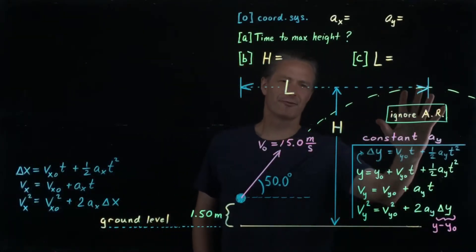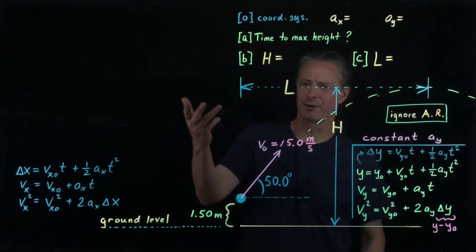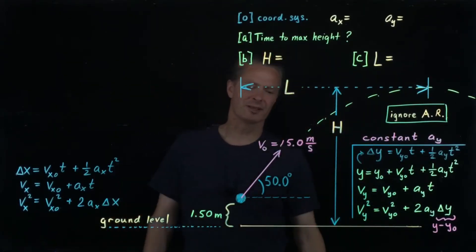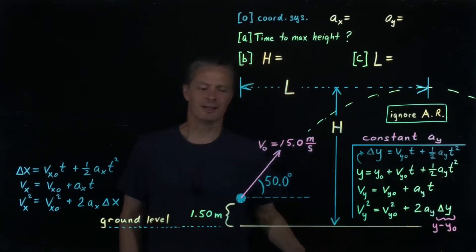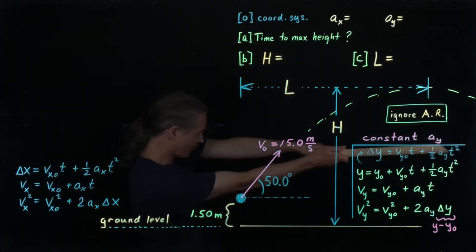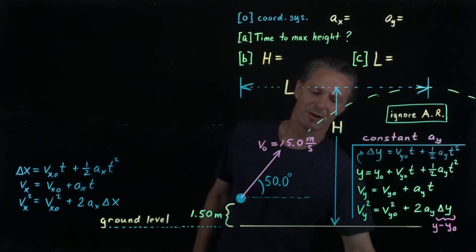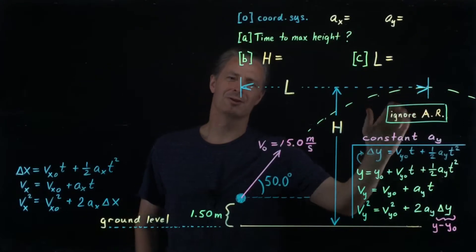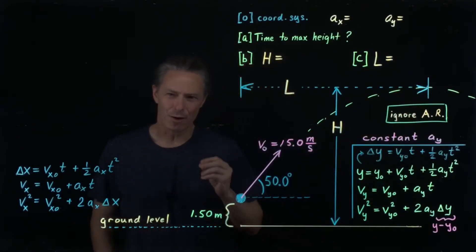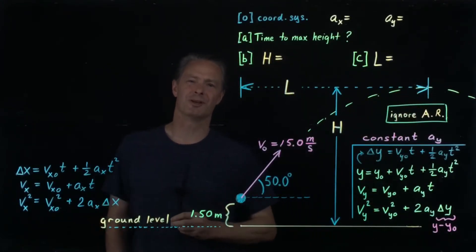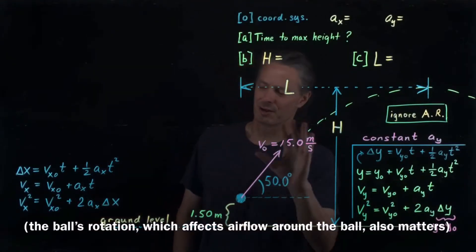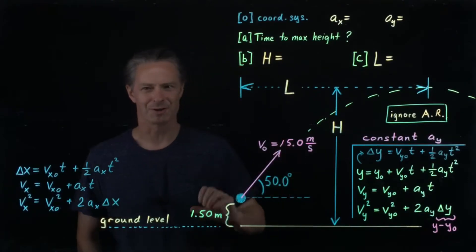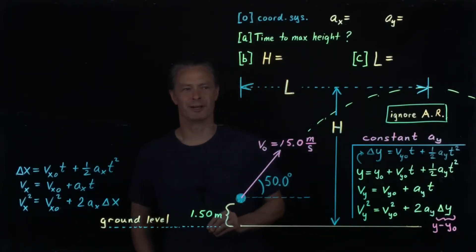Does it make a difference to ignore air resistance? If you're tossing a softball just a few meters away, it hardly makes any difference. On the other hand, if you're trying to calculate how far a home run ball will go based on the velocity as it leaves the bat, ignoring air resistance makes a big difference — you'll substantially overestimate how far the ball goes. This problem is closer to a soft toss than a home run, so the approximation won't be too awful.